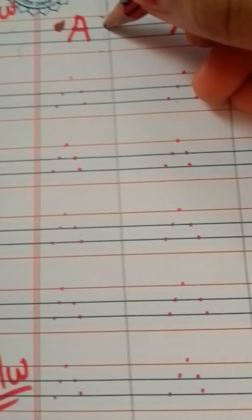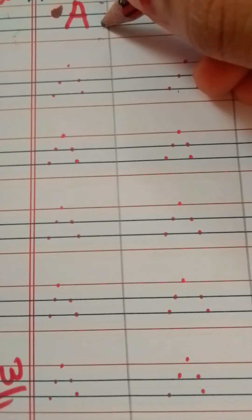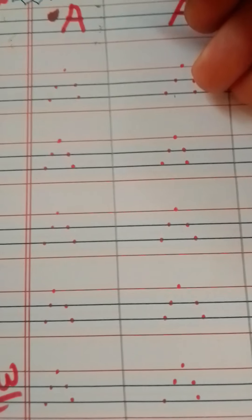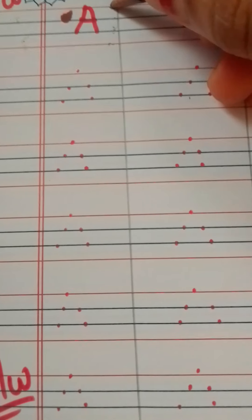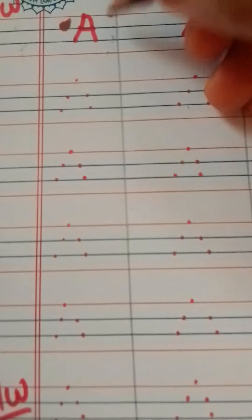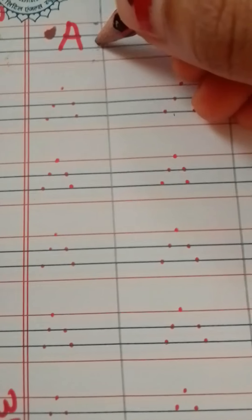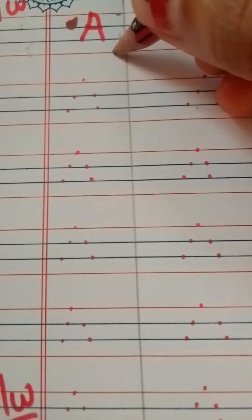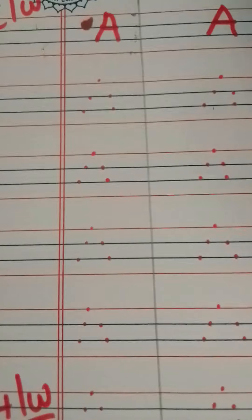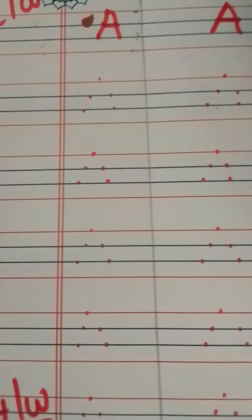Skyline, bottom line, two middle lines. When I say touch skyline, you should start from here. When I say two middle lines, you should start from here. When I say bottom line, you should start from here. Like this, you should trace.